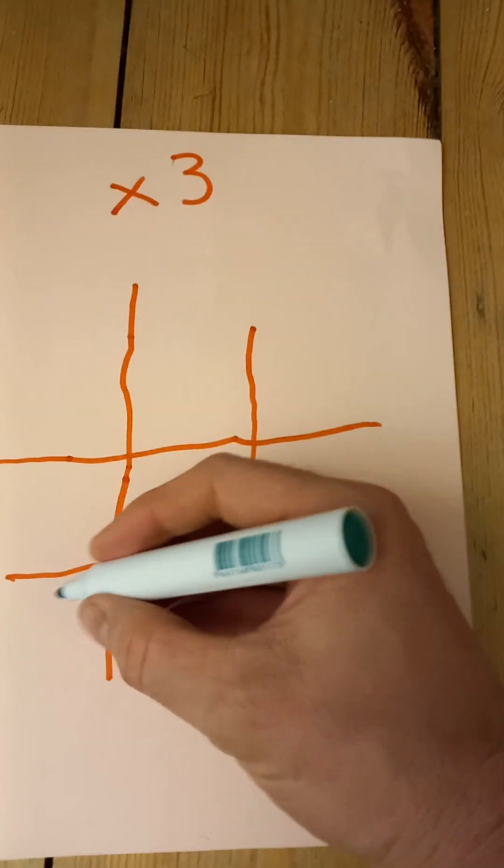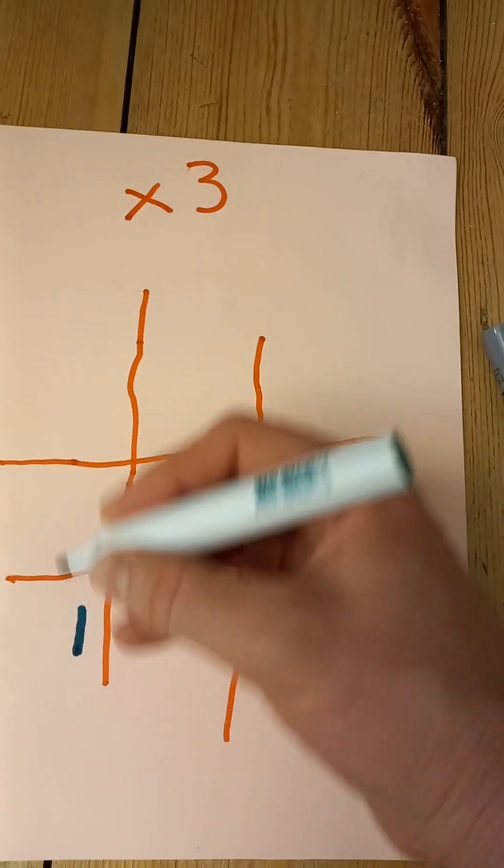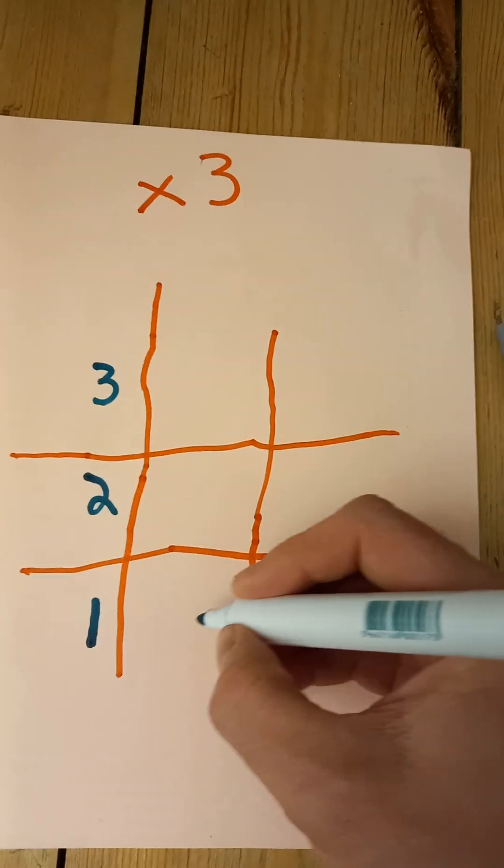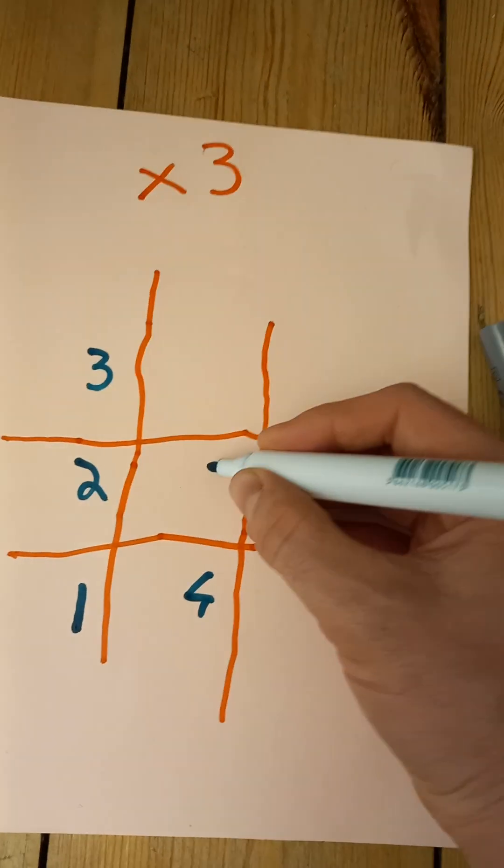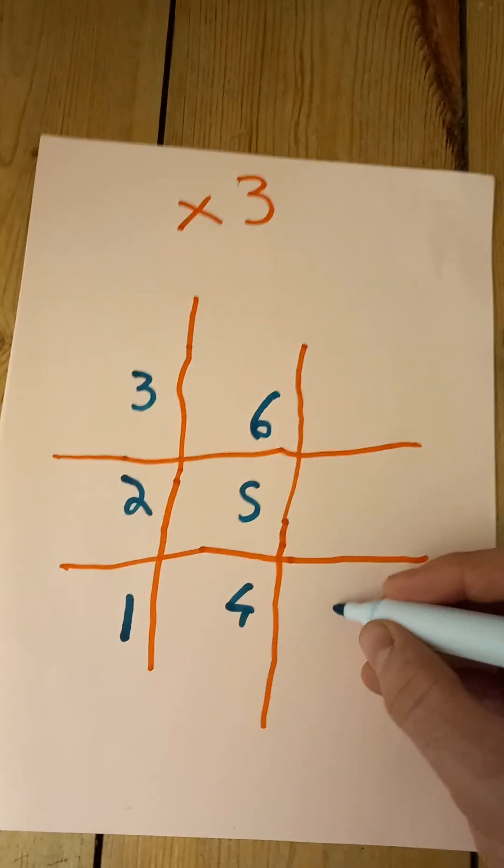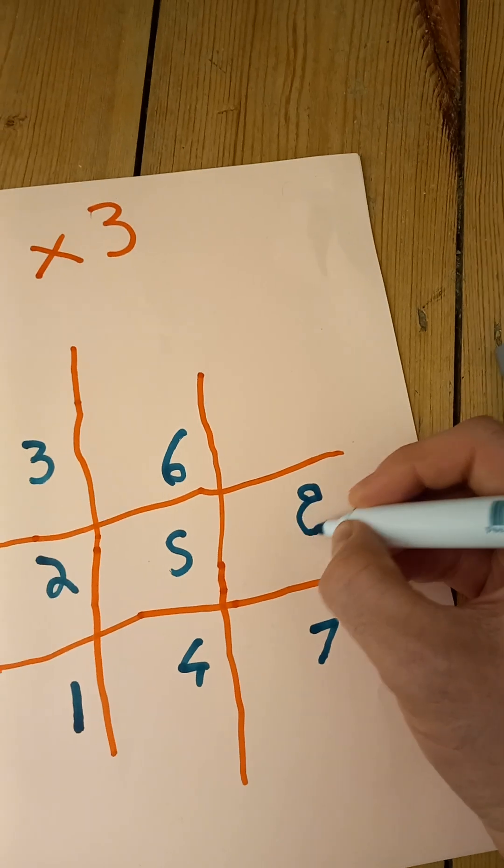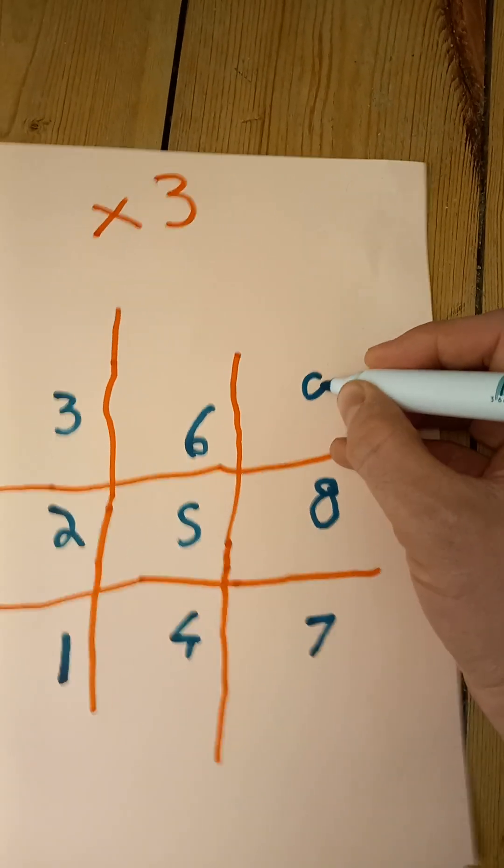Second step, what I'm going to do is I'm going to draw one, two, three, four, five, six, seven, eight and finally nine.